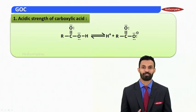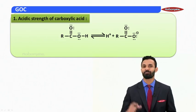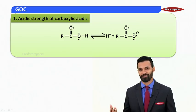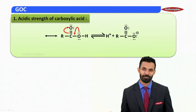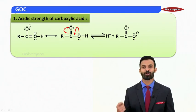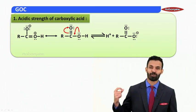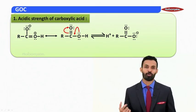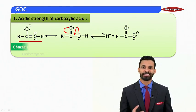Both structures have a lone pair–alternate pi condition present, which makes them eligible to show resonance. In the carboxylic acid structure, if we show delocalization, we get a resonating structure where the lone pair from the oxygen atom has delocalized — that oxygen carries a positive charge — and the doubly bonded oxygen gains an additional electron pair, carrying a negative charge. This newly obtained resonating structure carries both a positive and negative charge.